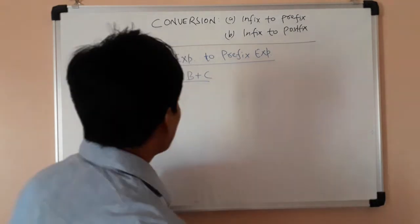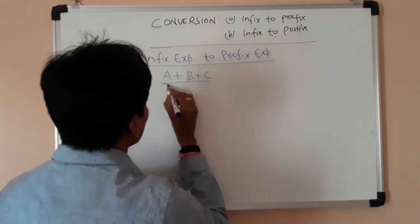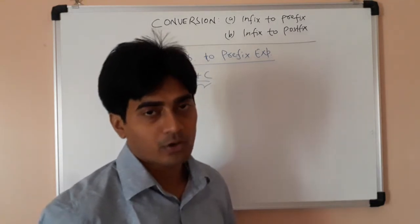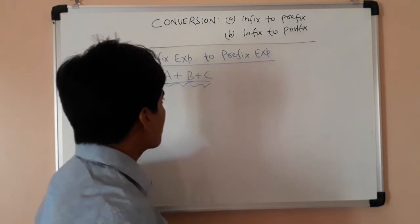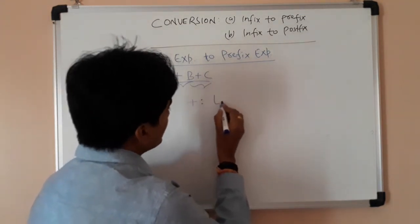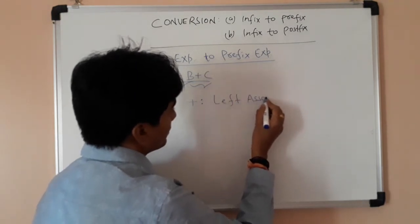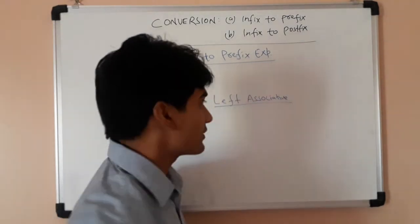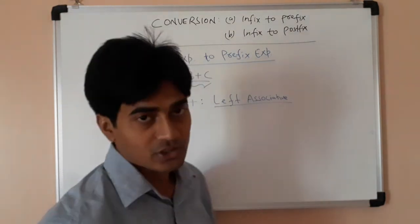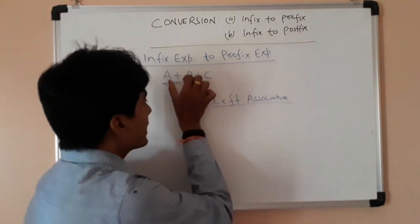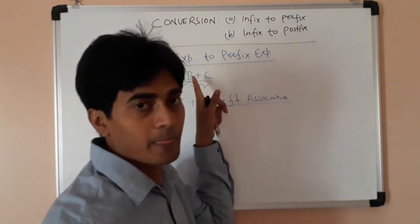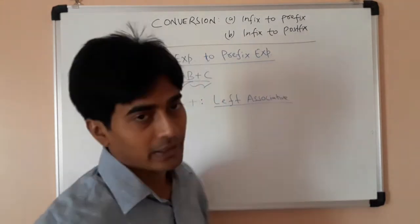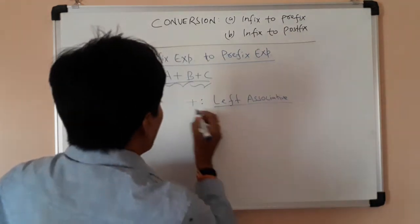So once again we are confused about which part will be calculated first — either this part or this part — because both have the same precedence or same priority. But the plus operator, or addition operator, says this is left associative. Left associative means that if two operators of the same nature appear in the expression, then the leftmost part will be calculated first, then the next left part, and so on from left to right.